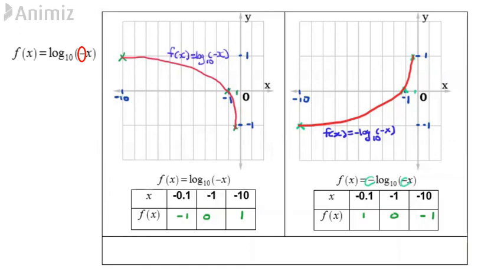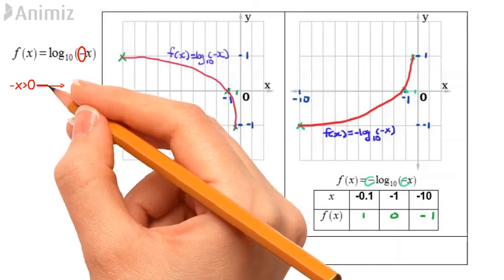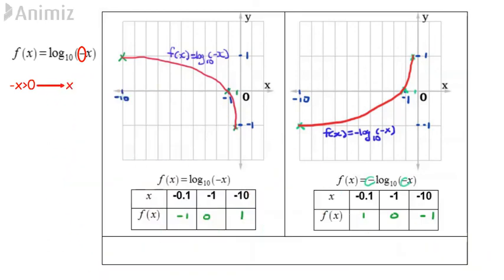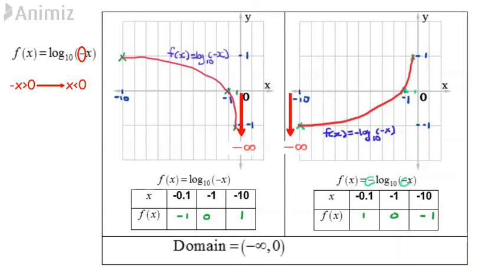These functions are defined for negative x. Since negative x greater than 0 implies x less than 0, the domain is all real numbers less than 0, or can be written as from negative infinity to 0. The graphs extend towards negative infinity and positive infinity, so the range is from negative infinity to positive infinity.